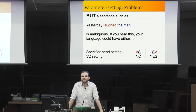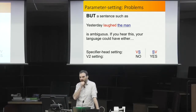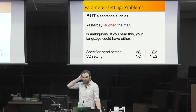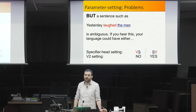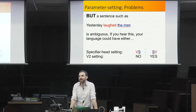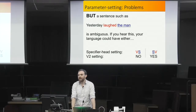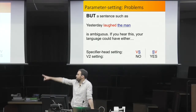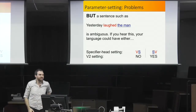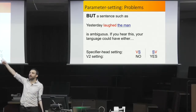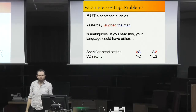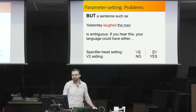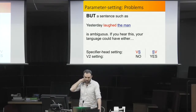One problem for parameter-setting theories is that many utterances are ambiguous with respect to different combinations of parameters. For example, a sentence like 'yesterday laughed the man' in a V2 language like German could reflect an SV specifier-head setting in a V2 language, or a genuine VS order in a non-V2 language. Individual utterances can thus be ambiguous when it comes to setting parameters.